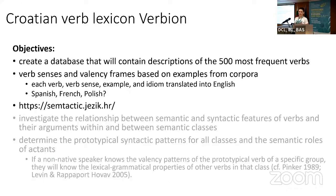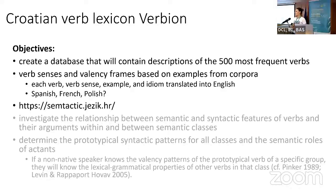This project began this year and one of the objectives is to create a database that will contain descriptions of the 500 most frequent verbs in Croatian — more precisely verb senses and valency frames based on examples from the corpora. Each verb sense, example, and idiom will be translated into English, and colleagues have shown interest to translate them into Spanish, French, and Polish as well, since many students in Poland study Croatian.